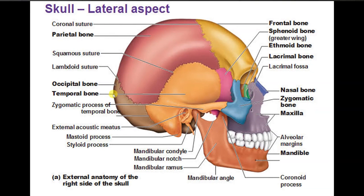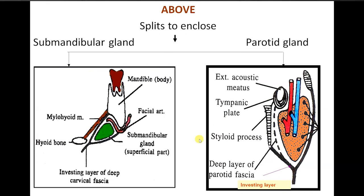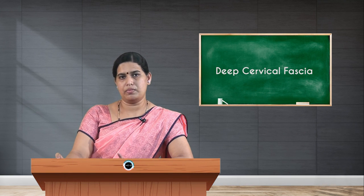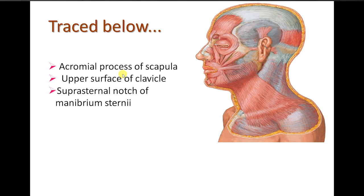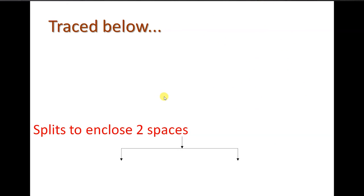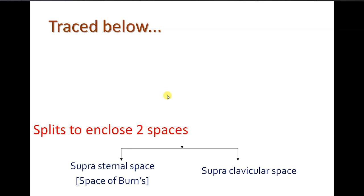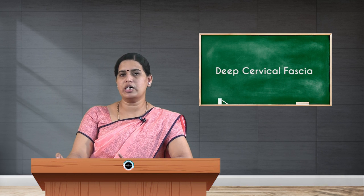To summarize from the diagram: superiorly from the external occipital protuberance, superior nuchal line, mastoid process, external acoustic meatus, zygomatic process, and lower border of the mandible, with the stylomandibular ligament thickening. Inferiorly, acromion process, spine of scapula, clavicle, and manubrium sterni. At the lower extent it splits to enclose the suprasternal space (space of Burns) and the supraclavicular space. Thank you.